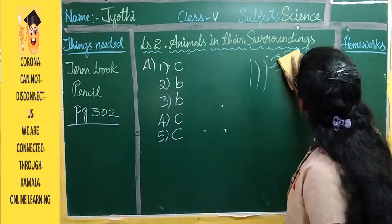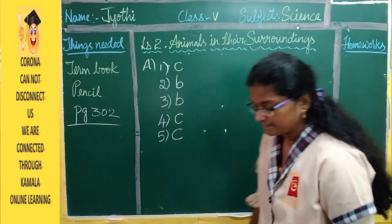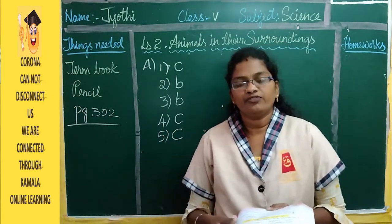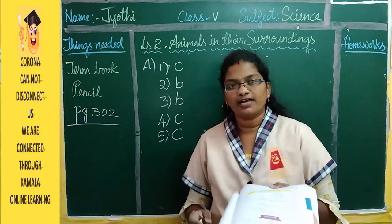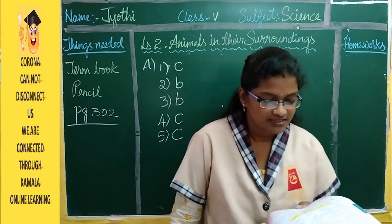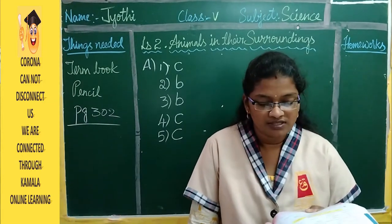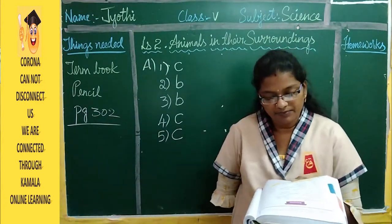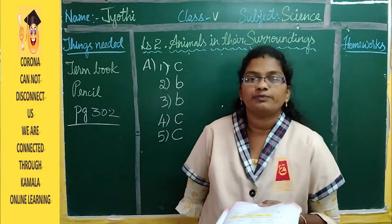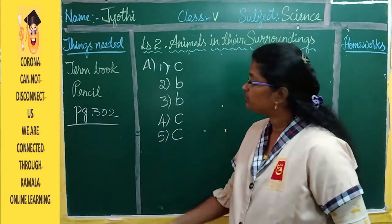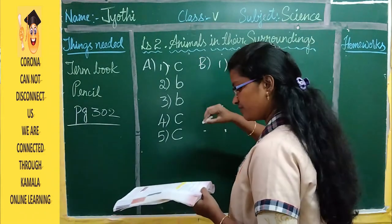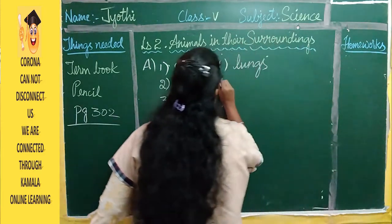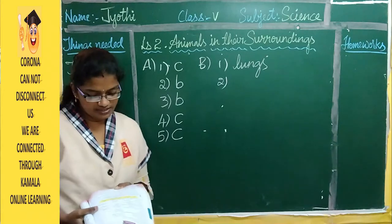Now fill in the blanks. The options given are: lungs, hind limbs, armadillo, trachea, and rodents. First blank: birds and reptiles breathe through their lungs.